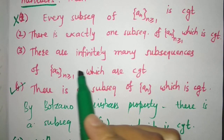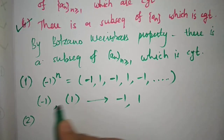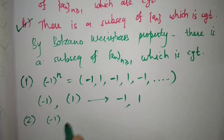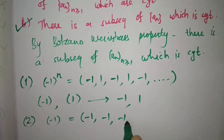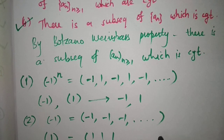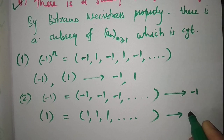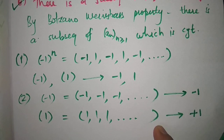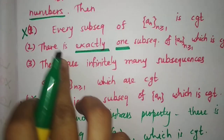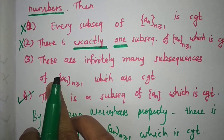Option 2 states there is exactly one subsequence of a_n which is convergent — this is also false. Using the same example (-1)^n, there are two convergent subsequences: the constant subsequence -1, -1, -1, ... which converges to -1, and the constant subsequence 1, 1, 1, ... which converges to 1. Since there are at least two convergent subsequences, option 2 is false.